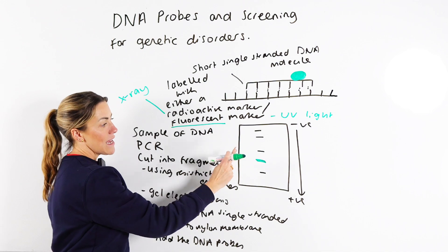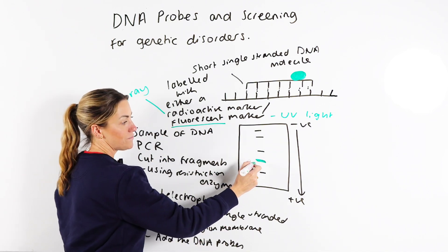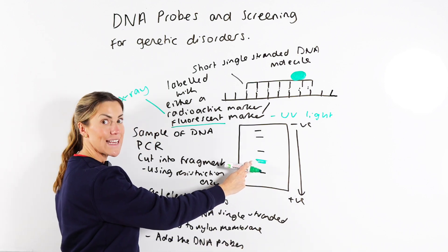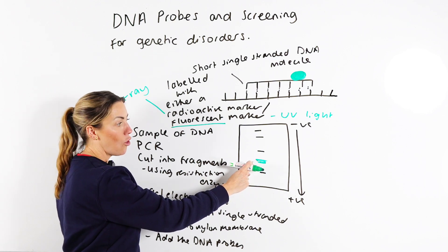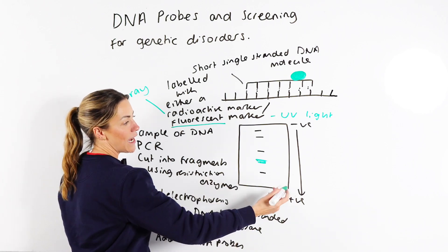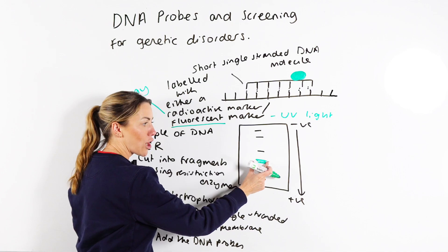But here, I've added DNA probes with fluorescent markers attached. Obviously, they had this particular allele of interest in their DNA. The probe has been able to bind or hybridize, because the base sequence is complementary. When I shine UV light over this membrane, that is going to glow.